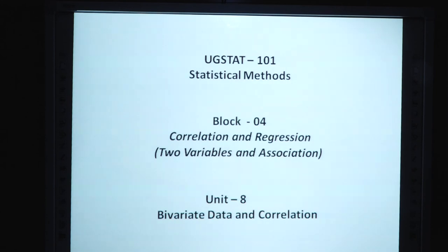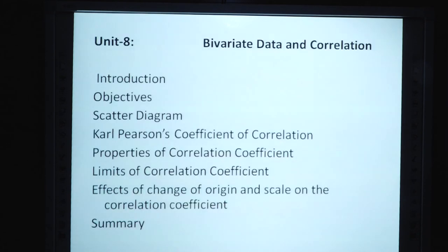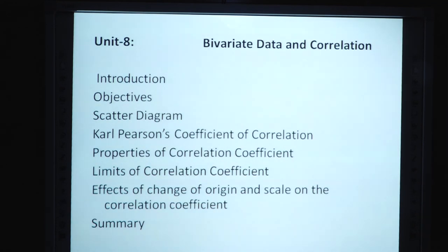UGSTAT 101, Statistical Methods, Block 4, Correlation and Regression, Two Variables and Association, इसके Unit 8, Bivariate Data and Correlation. सबसे पहले हम इसमें क्या देखेंगे? इसका Introduction, Objectives, Scattered Diagram, Carl Pearson Correlation Coefficient, Properties of Correlation Coefficient, Limits of Correlation Coefficient, Effect of Change of Origin and Scale on the Correlation Coefficient, और इन सब के बाद इस Unit की Summary.